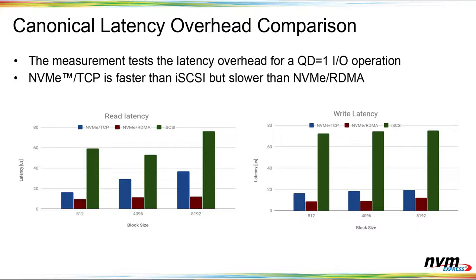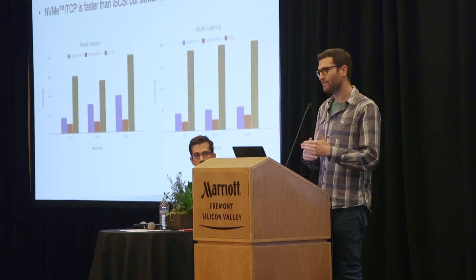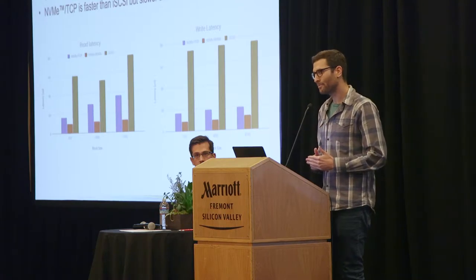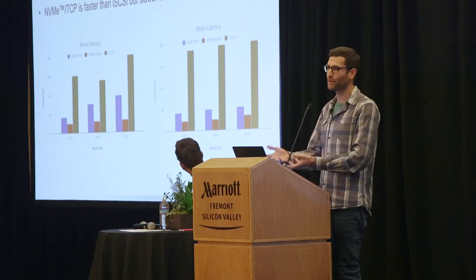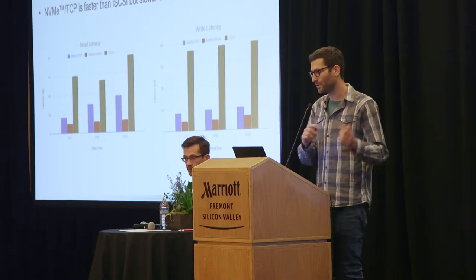For writes, the overhead with TCP is typically lower because we never copy on the TX transmission side — we only copy on datagrams received back to the user buffer.